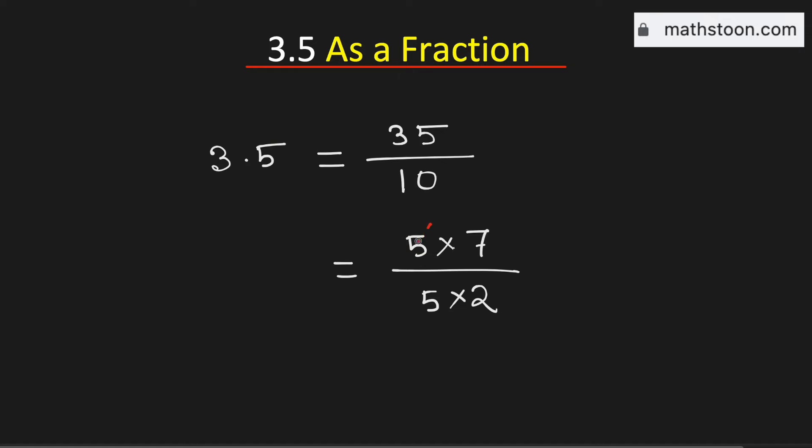Now we can cancel 5 because it is present in both the numerator and the denominator. So it is now equal to 7 over 2.